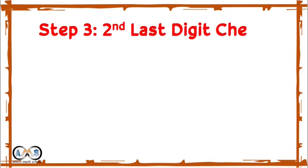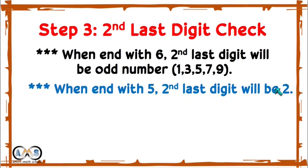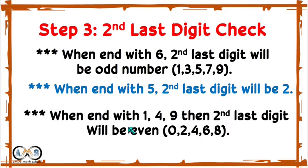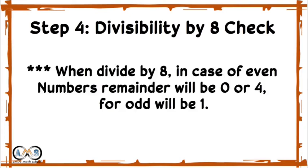Step 3 is the second last digit check: when a perfect square number ends with 6, the second last digit must be odd; when it ends with 1, 4, or 9, the second last digit must be even. Step 4 is the divisibility by 8 check: for even perfect square numbers the remainder is 0 or 4; for odd perfect square numbers the remainder is 1.